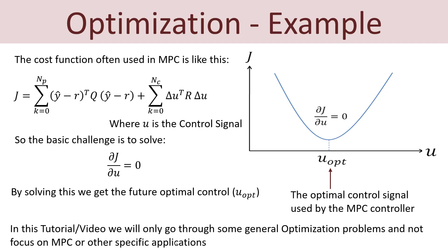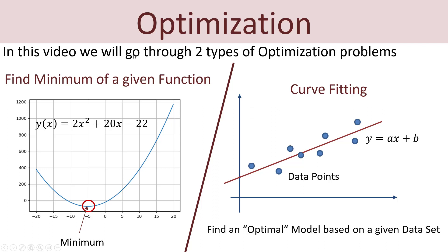In this video we will go through two main types of optimization problems: finding the minimum of a given function, and curve fitting. For finding the minimum, here is a basic example: the function y(x) = 2x² + 20x - 22, and we want to find its minimum. For curve fitting, we have a model and a given set of data and want to find the optimal model parameters.